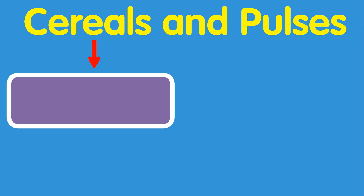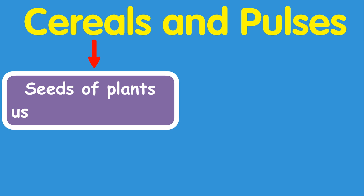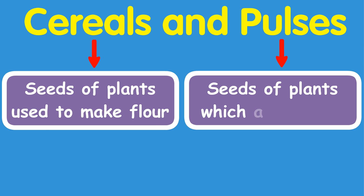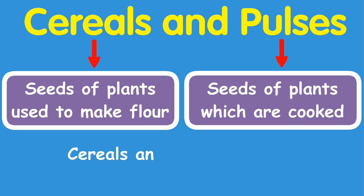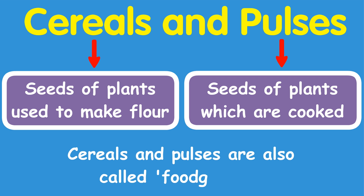Cereals and pulses. Seeds of plants used to make flour are called cereals. Seeds of plants which are cooked are called pulses. Cereals and pulses are also called food grains.